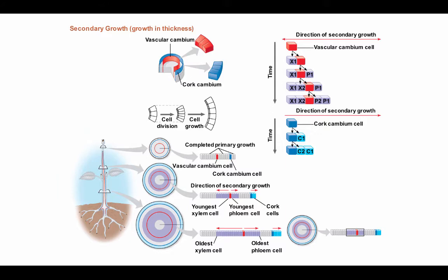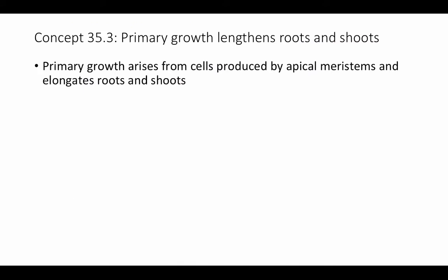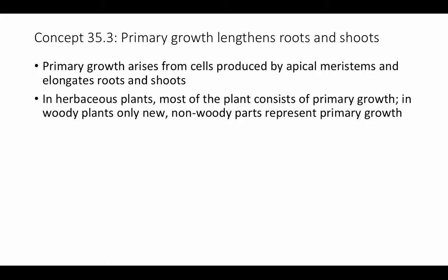Now let's take a closer look at primary growth and how it works to lengthen roots and shoots. Primary growth arises from cells produced by apical meristems and serves to elongate roots and shoots. In herbaceous plants, most of the plant consists of primary growth. In woody plants, only new non-woody parts represent primary growth — the addition of new branches, growth from the top of the tree, and elongation of roots are the primary growth seen in woody plants such as trees.